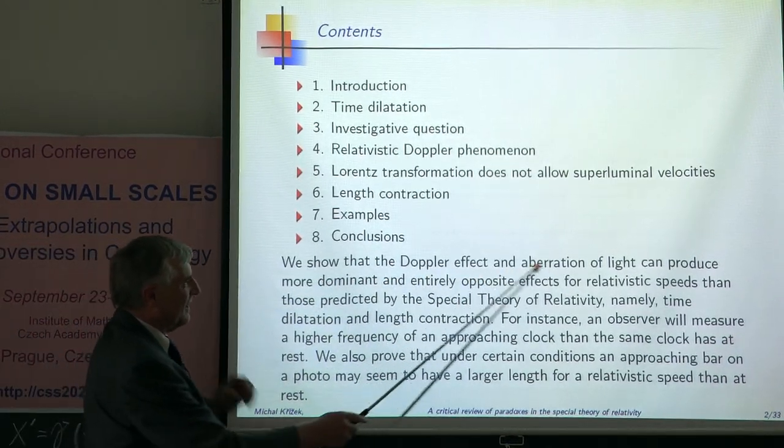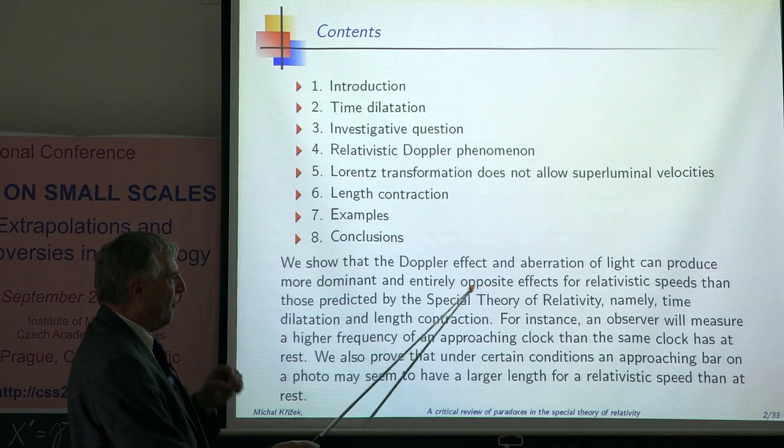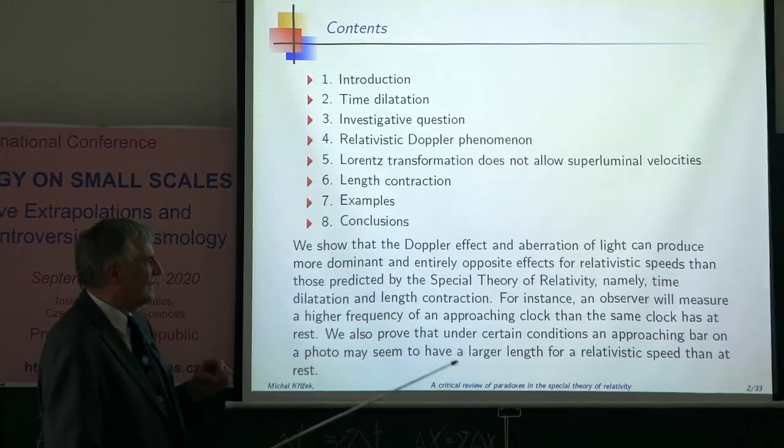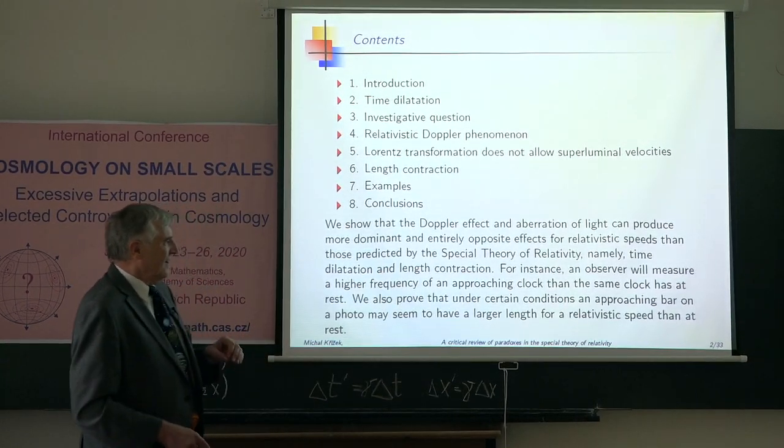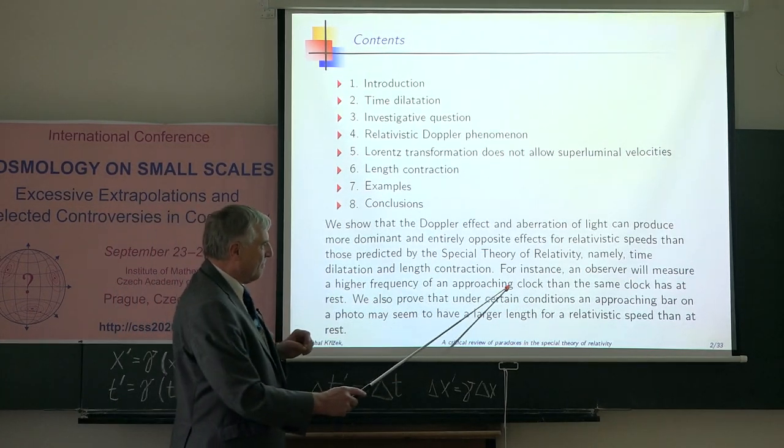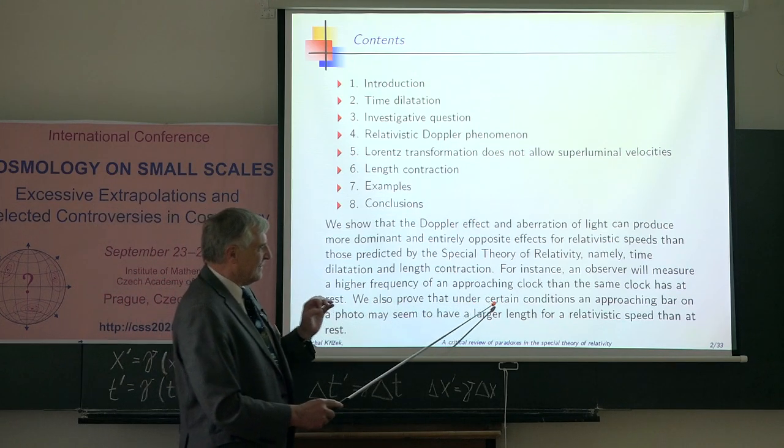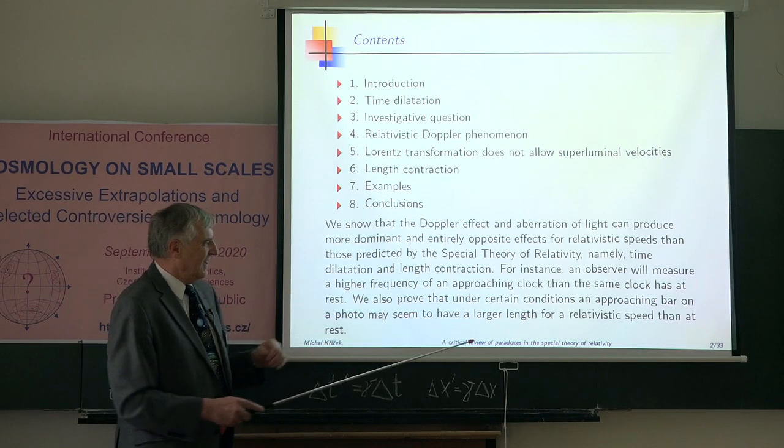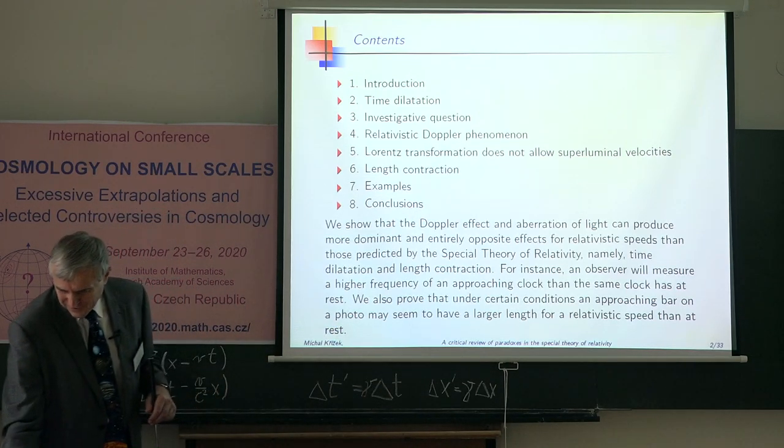We show that the Doppler effect and aberration of light can produce more dominant and entirely opposite effects for relativistic speeds than those predicted by the special theory of relativity, namely time dilation and length contraction. For instance, an observer will measure a higher frequency of an approaching clock than the same clock has at rest. We also prove that under certain conditions, an approaching bar on a photo may seem to have a larger length for relativistic speed than at rest. So it is completely opposite.